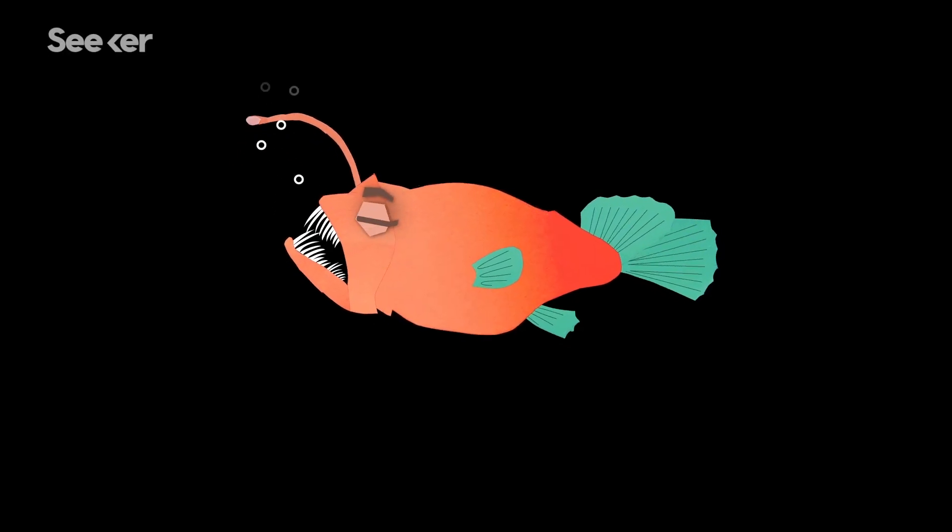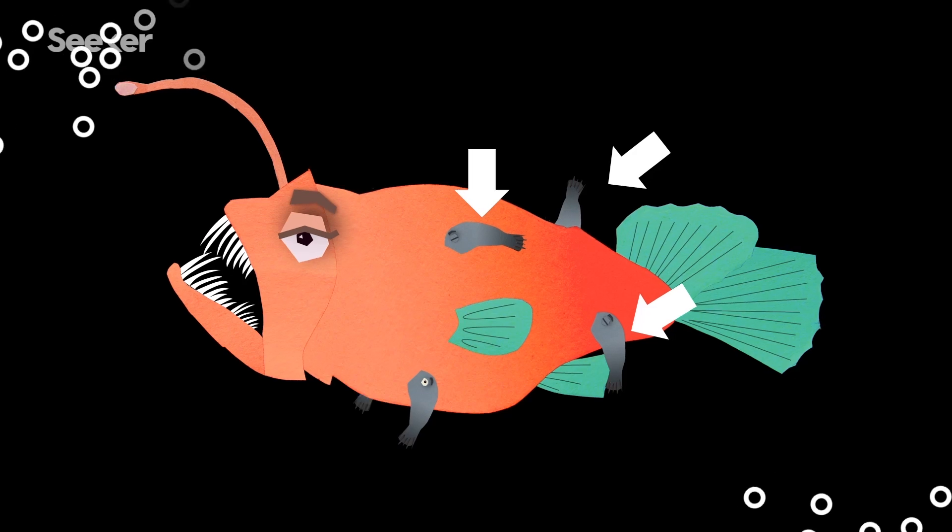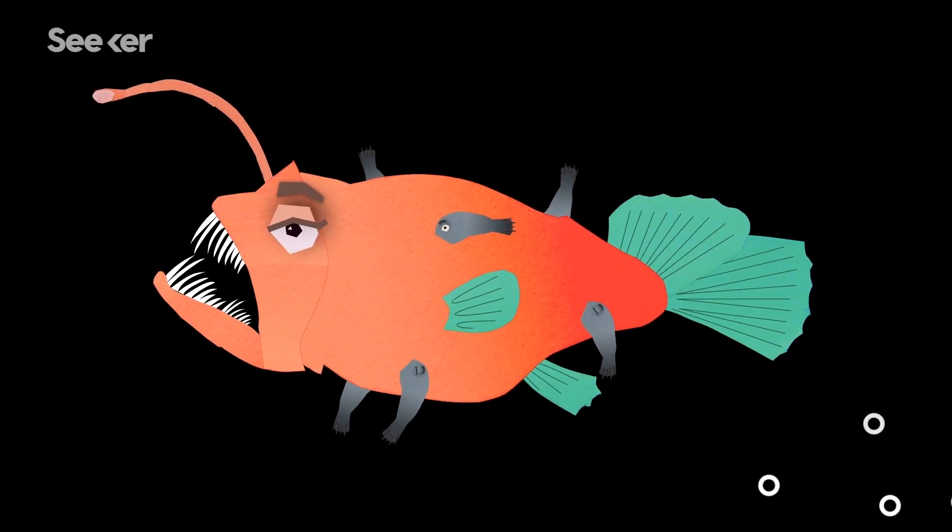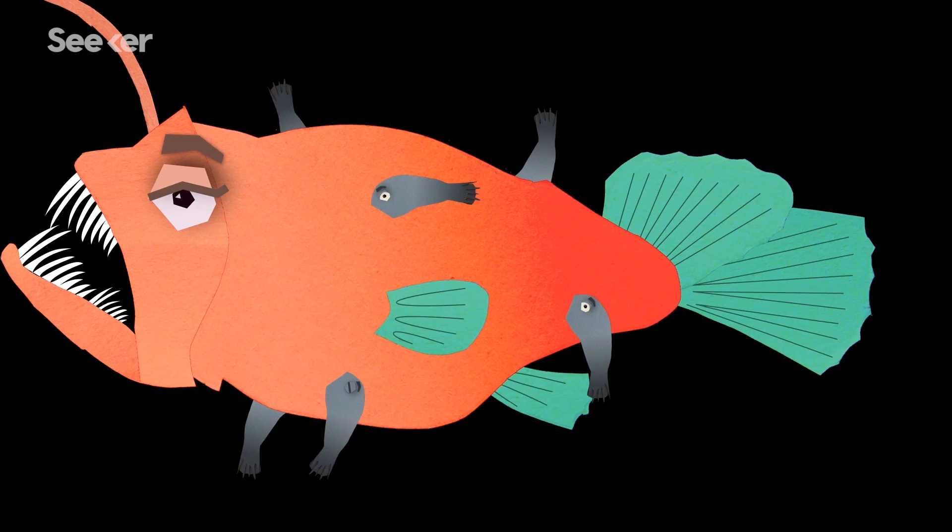This is a female anglerfish. And this is her mate. And these are her other mates. They're all locked lovers for life because, well, the males have no choice.